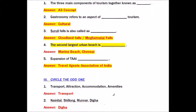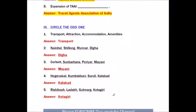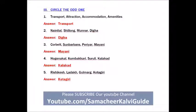Roman number three: Circle the odd one. Question number one: Transport, Attraction, Accommodation, Amenities. The odd one is Transport.